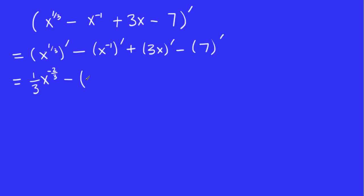Well, n is negative 1 and we're going to use the power rule. So, negative 1 x to the negative 1 minus 1, which is negative 2.